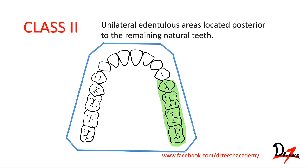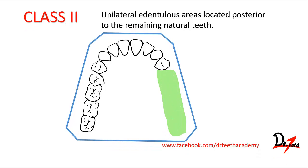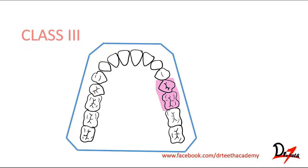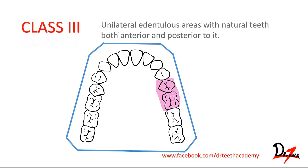Class II is a unilateral edentulous area located posterior to the remaining natural teeth — here you can see we have a unilateral edentulous area. Class III is a unilateral edentulous area with natural teeth both anterior and posterior to it. Here is our edentulous area and we have teeth both anterior and posterior to it.